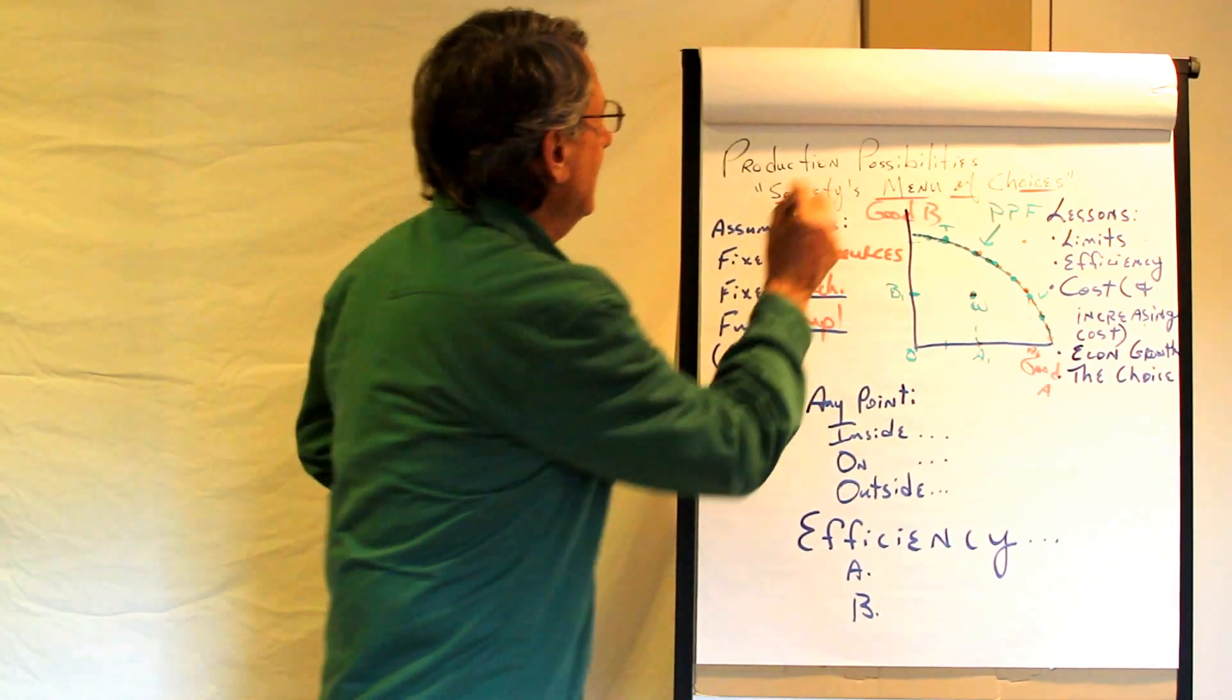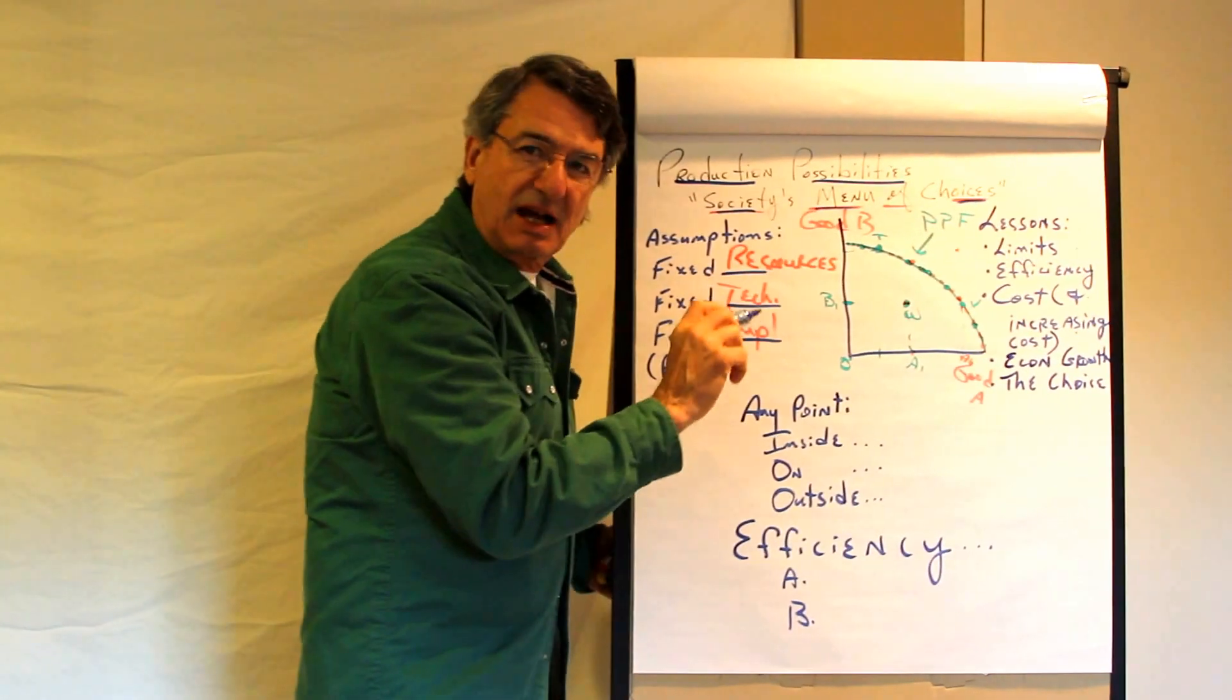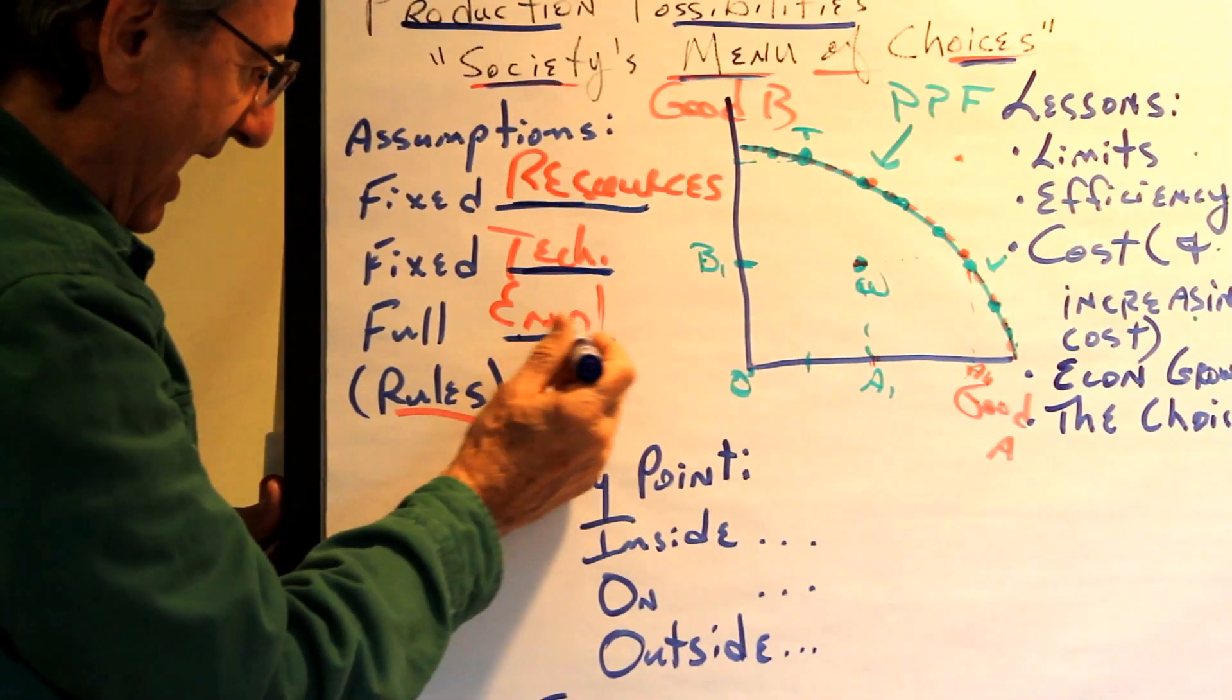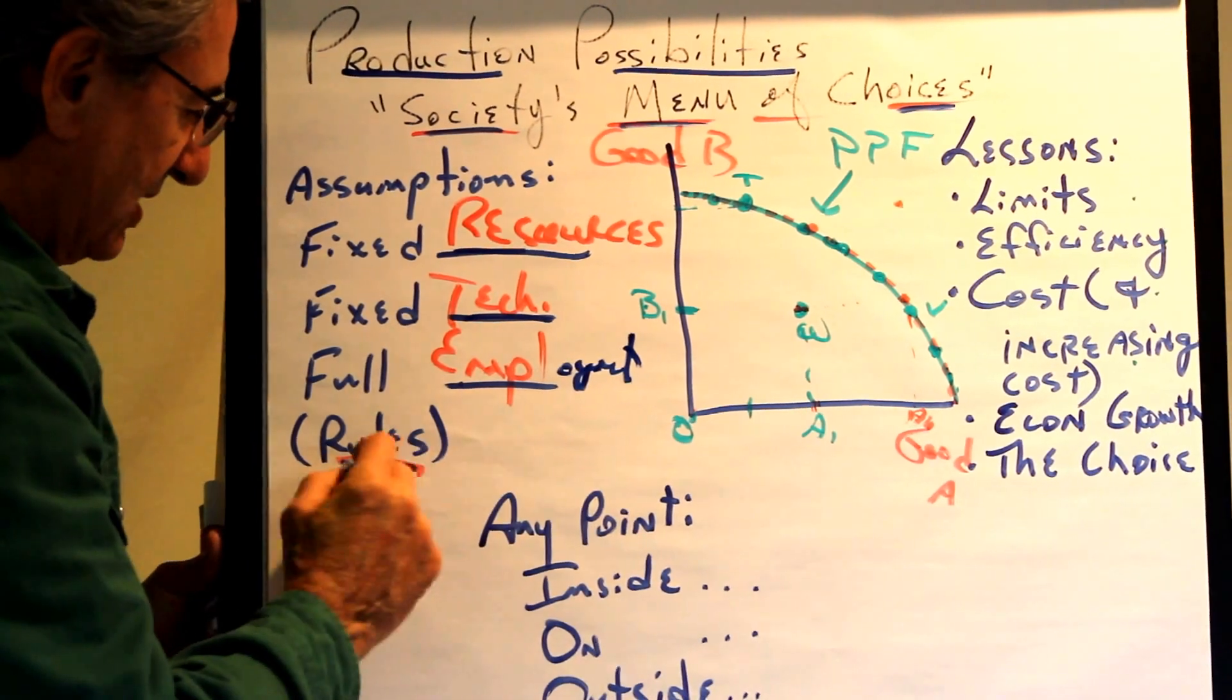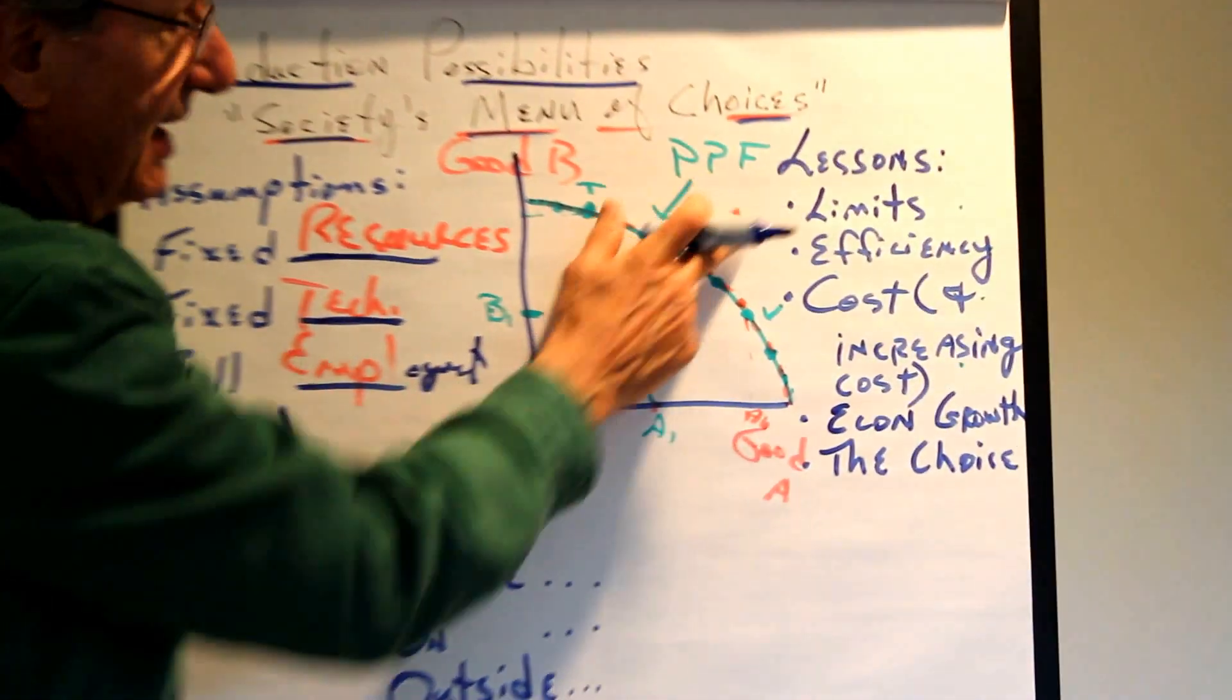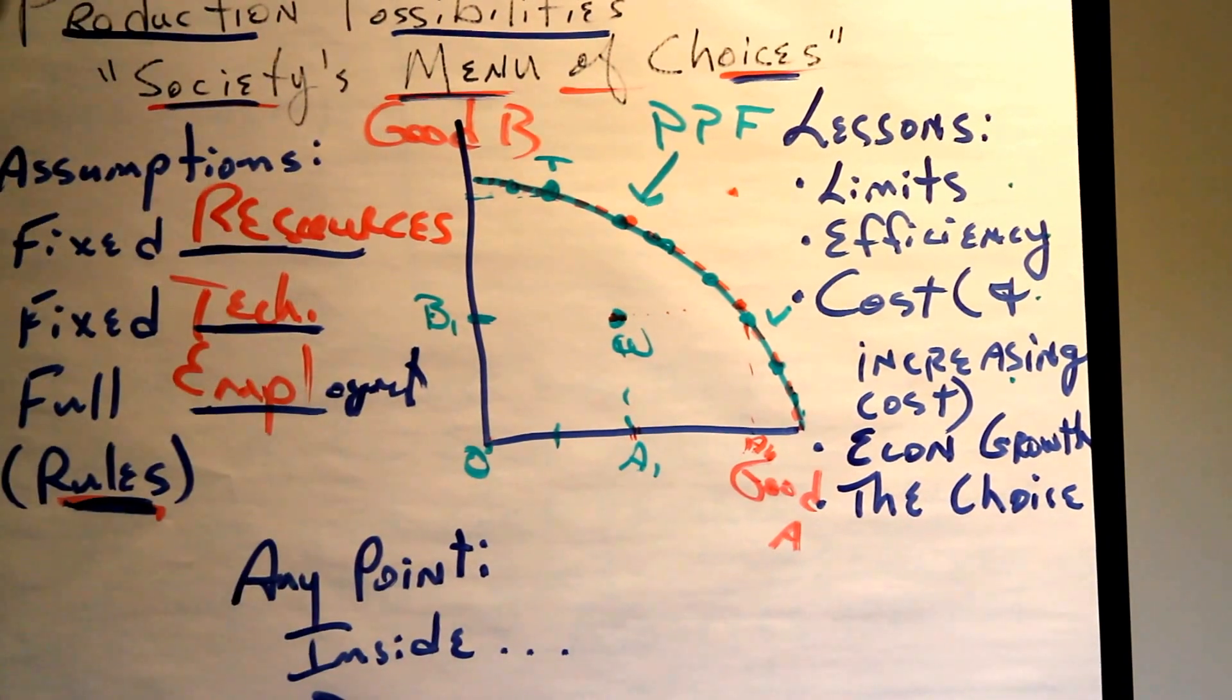So today we're going to talk about production possibility. This is society's menu of choices. It assumes that scarcity exists, that there are fixed resources, fixed technology, and there is full employment of these resources. We're going to use the production possibilities frontier to tell stories about limits, efficiency, cost, the law of increasing costs, economic growth, and the choice between present and future consumption.